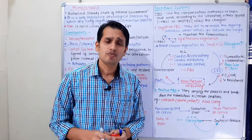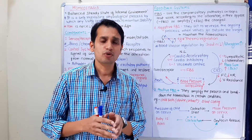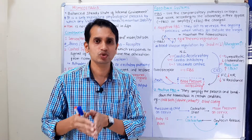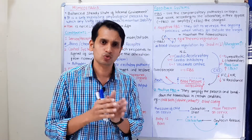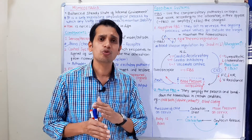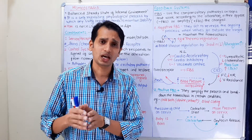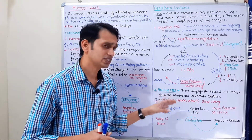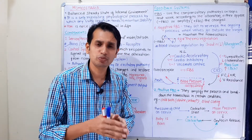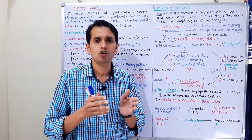Now let's come to the positive feedback system. Positive feedback systems amplify the ongoing process — if values are decreasing they decrease further, if increasing they increase further. The basic difference between negative and positive feedback is that negative feedback maintains and restores homeostasis, while positive feedback does not restore homeostasis — it amplifies the process and can break down homeostasis. Positive feedback applies only in certain specific conditions, not universally. Negative feedback systems are involved in all regulatory pathways and maintain homeostasis in our body.